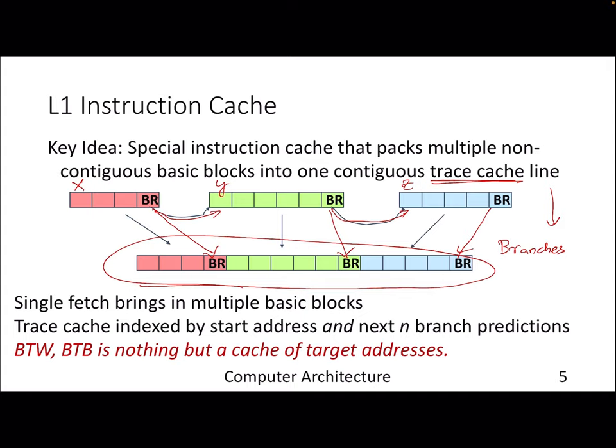The structures we discussed during our branch predictors — like BTB — are nothing but caches. BTB is a cache that stores target addresses, and the indexing mechanism discussed in the previous lecture also applies to BTB. Other structures like PHT or BST are eventually implemented as SRAMs.